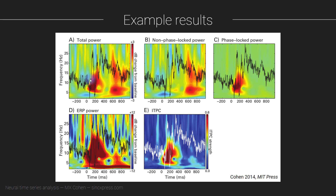It's interesting to compare the total and non-phase-locked TF plots. This early power burst is almost entirely phase-locked — you don't see it once you remove the phase-locked part. In contrast, this later multi-spectral component — these red blobs — survives almost perfectly, meaning it is non-phase-locked relative to stimulus onset. You should not conclude that the later activity is always non-phase-locked and earlier activity always phase-locked — that's just how it mapped out in this particular data.